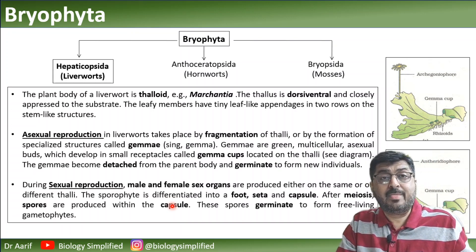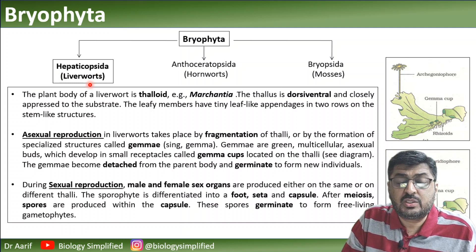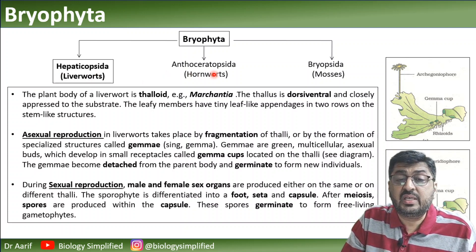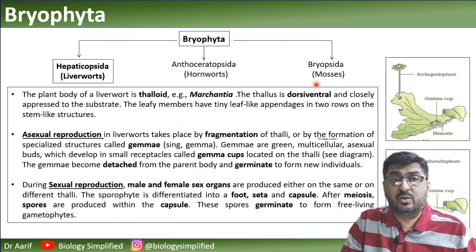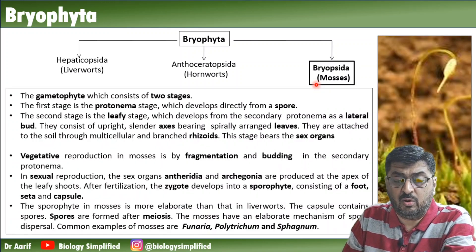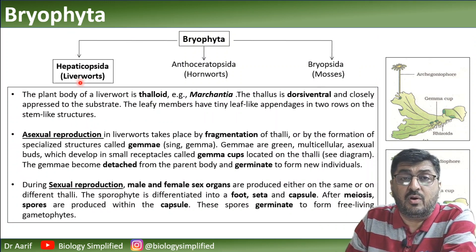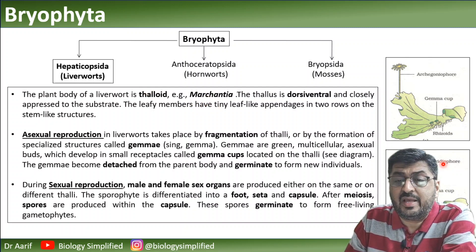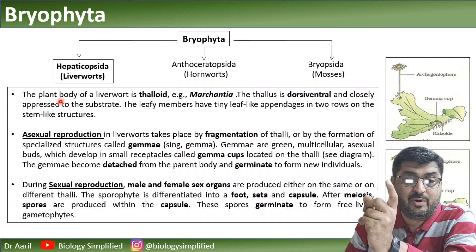Bryophyta has three groups: Hepaticopsida which are the liverworts, Anthocerotopsida which are the hornworts, and Bryopsida which are the mosses. However, as per the NCERT, we are going to study only two: Hepaticopsida and Bryopsida. The main example of Hepaticopsida is Marchantia, as shown in the NCERT diagram.